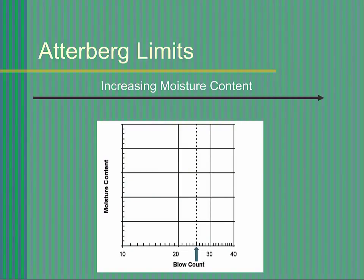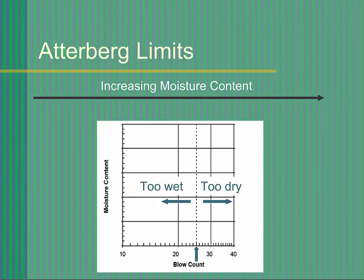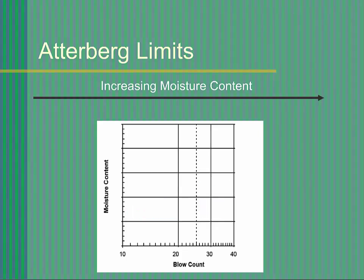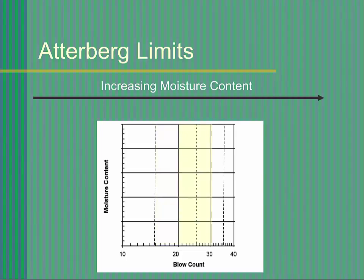The soil is said to be at the liquid limit when exactly 25 drops are required to close the groove 13 millimeters. If more than 25 blows are required, the soil is drier than the liquid limit; if less than 25, it is wetter than the liquid limit. Depending on the number of blows required to close the groove, add or remove water from the soil to make it more or less stiff and repeat the test. It is not necessary to hit exactly 25 blows to complete the test properly. The goal is to obtain three samples with blow counts between 15 and 35: one sample with a count between 15 and 25 blows, one between 20 and 30, and one between 25 and 35 blows. If the number of blows is less than 15 or greater than 35, the soil is too wet or too dry. Do not record the data; adjust the moisture content of the sample and try again.